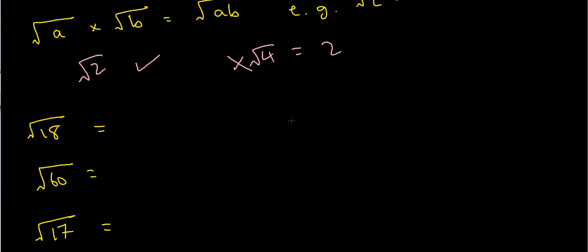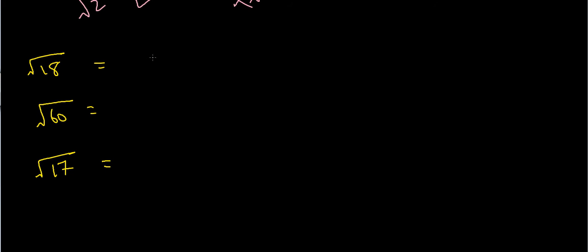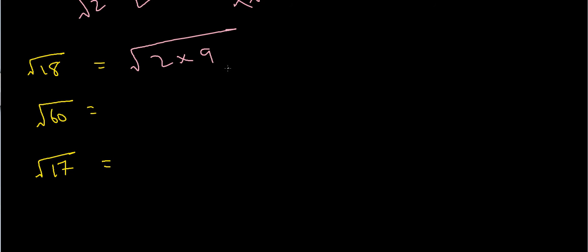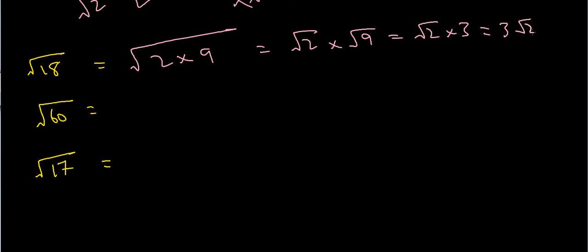Let's look at the square root of 18. I know that 2 times 9 is 18, so this is the same as the square root of 2 times 9. Using the rule above, I can split this into the square root of 2 times the square root of 9. Since 3 squared is 9, I can write this as the square root of 2 times 3, or equivalently 3 root 2.